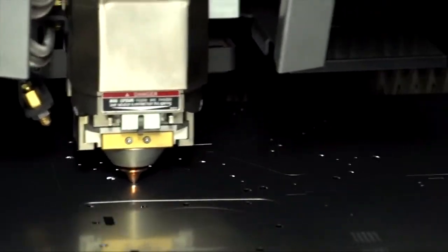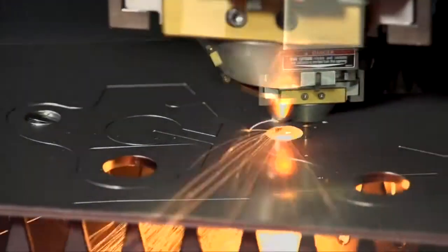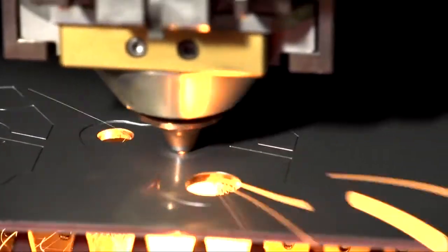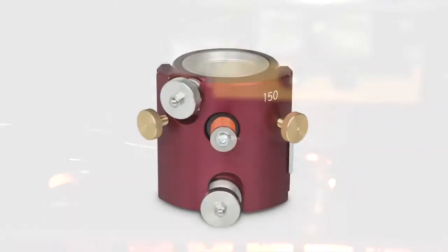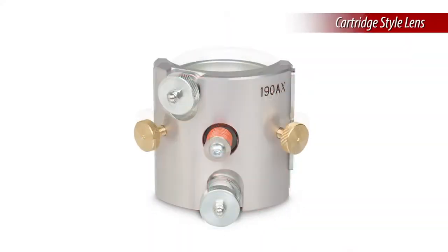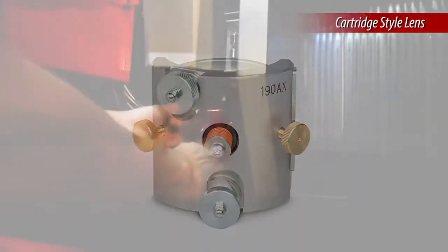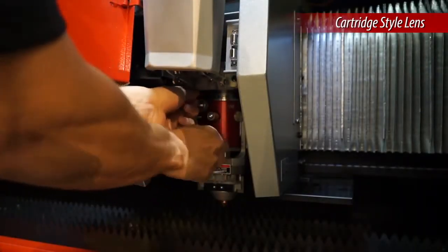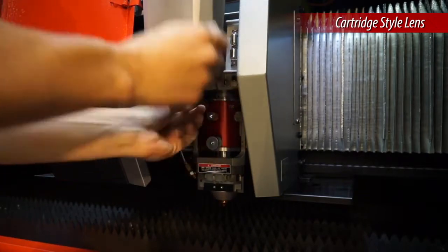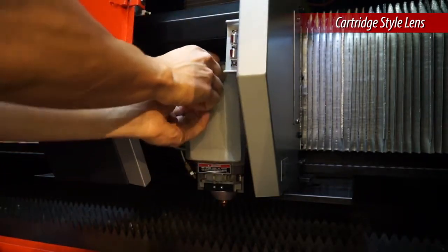The high-speed laser head has a fast sensing processor to allow for the increased feed rates and enhanced height sensing control. The cutting head also features a one-touch cartridge style lens holder allowing for quick setups between different materials. No tools are required to exchange the lens cartridge.